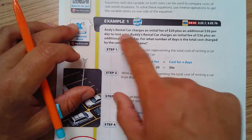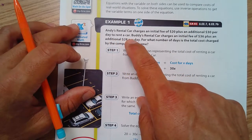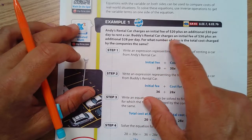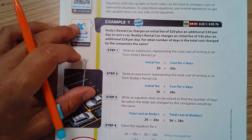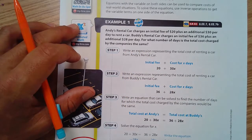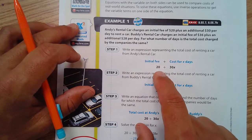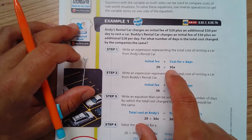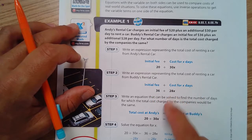In this example, Andy's rental car charges an initial fee of $20 plus an additional $30 per day to rent a car. Buddy's rental car charges an initial fee of $36 plus an additional $28 per day. For what number of days is the total cost charged by the companies the same? The initial fee means you start with paying 20 bucks, then $30 each day. For Buddy's, you start with an initial fee of $36, then each day you pay $28.